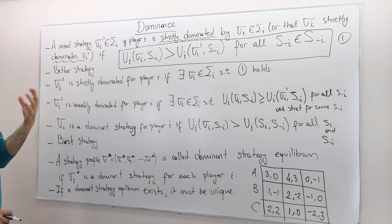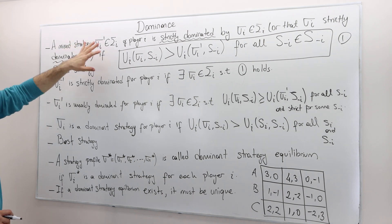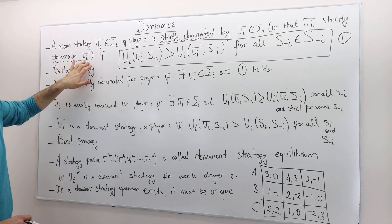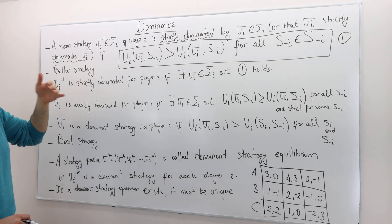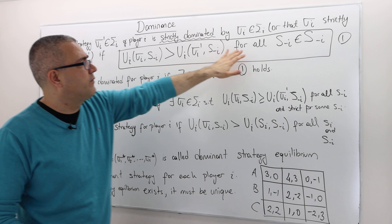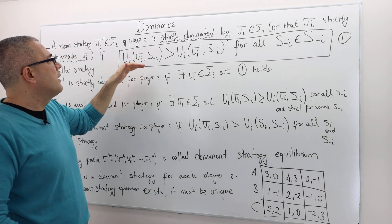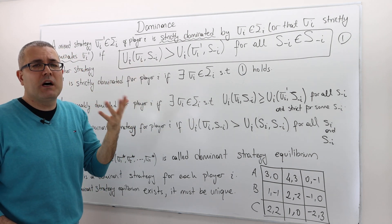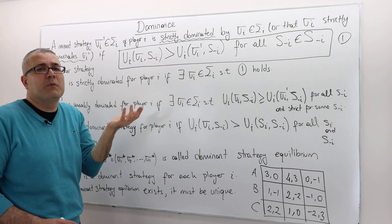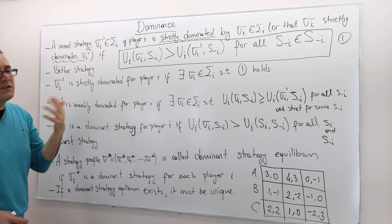A dominating strategy — sigma_i is strictly dominating sigma_i_prime — is actually a better strategy, because regardless of what your opponents do, for all s_minus_i, playing sigma_i will always give you a higher payoff. So it's better than sigma_i_prime, and you should always play sigma_i rather than sigma_i_prime. However, it may not be the best — it's just a better strategy.